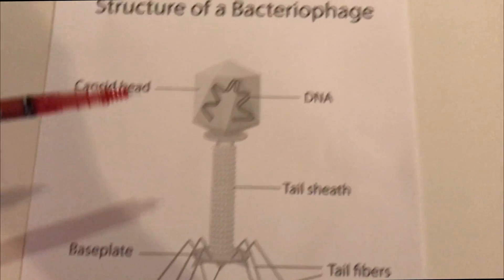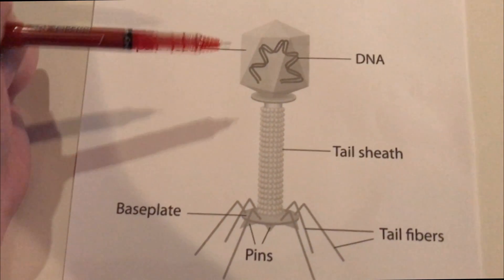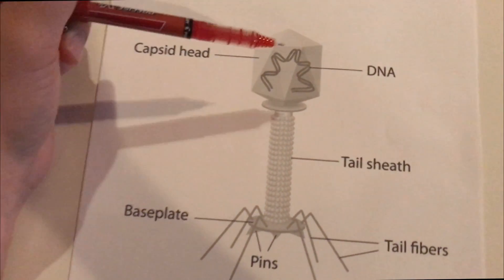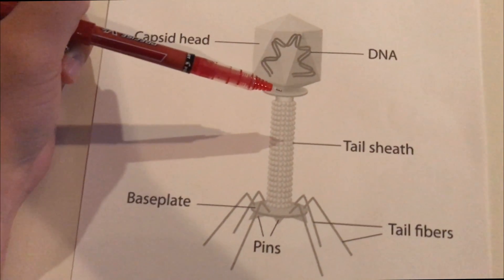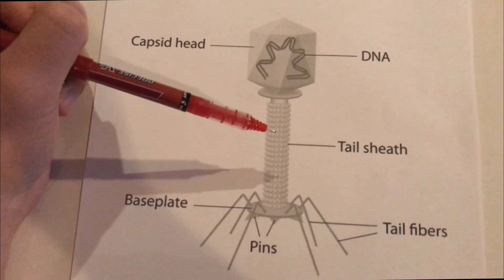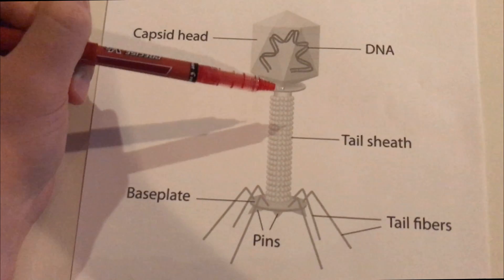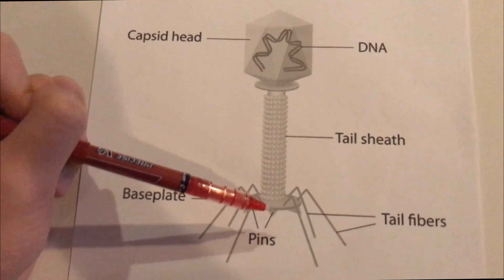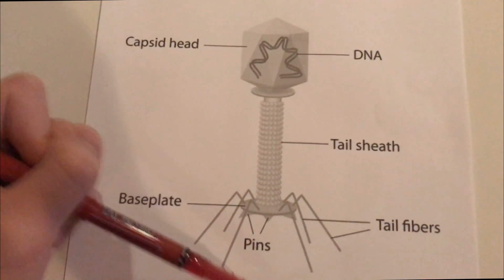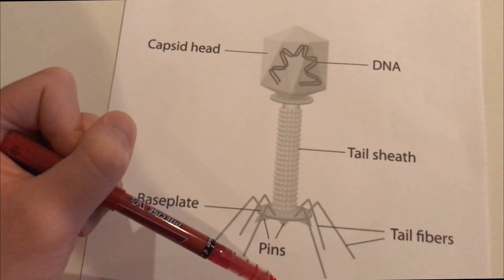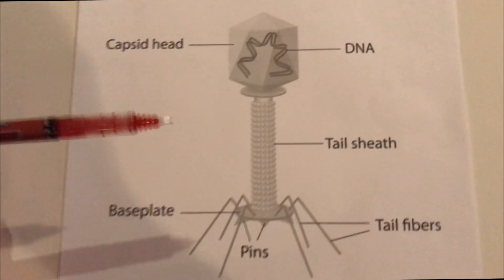And so basically, when a bacteriophage is ready to infect a bacteria, they basically pressurize their bodies and push this DNA all the way down into the end, so the DNA goes right into the bacteria — and that's how they infect the bacteria.